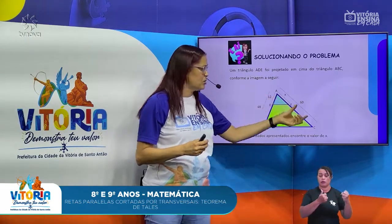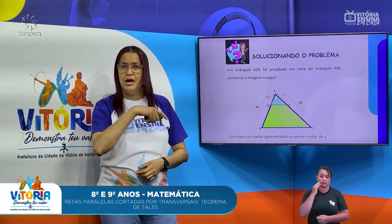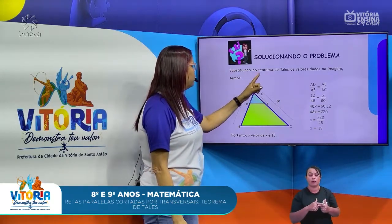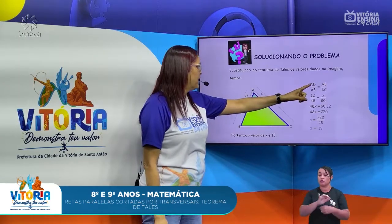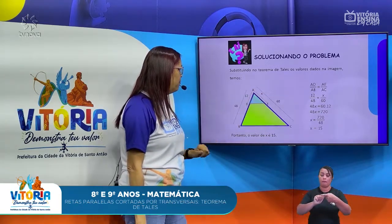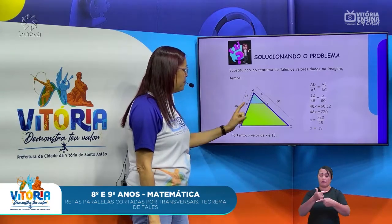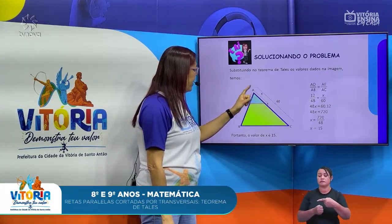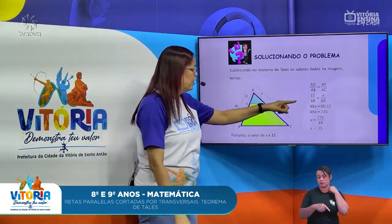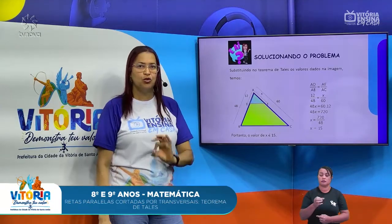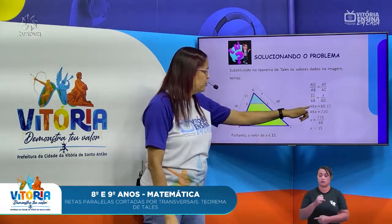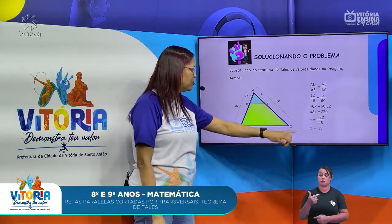12 está para 48, assim como X está para 60. Substituindo no Teorema de Tales os valores dados na imagem: AD está para AB, assim como AE está para AC. Quem é AD? 12. Quem é AB? 48. 12 está para 48. Quem é AE? X. E quem é AC? 60. X está para 60. Multiplicando meios por extremos, eu tenho 48X, que é igual a 60 vezes 12. 48X igual a 60 vezes 12. 60 vezes 12 vai me dar quanto? 720.